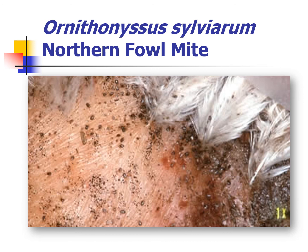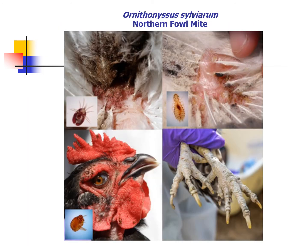This diagram shows Ornithonyssus sylviarum mites and excrement on the vent area of a broiler breeder hen. Another diagram shows ectoparasitic arthropod pests of poultry. Clockwise from the upper left, we have Ornithonyssus sylviarum, or the northern fowl mite; Menacanthus stramineus, or the chicken body louse; the scaly leg mite, Knemidocoptes mutans; and Echidnophaga gallinacea, or the sticktight flea.